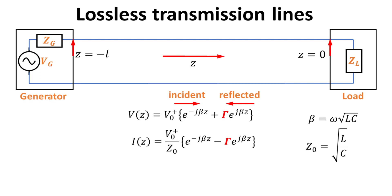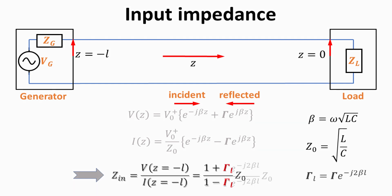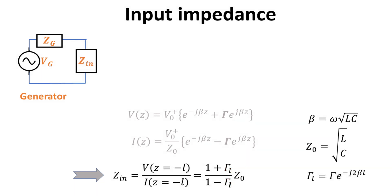We are now only left with one unknown, V0-plus. V0-plus can also be determined by specifying the boundary condition on the generator side. Let us define an input impedance Z_in, which is the impedance as seen from the generator end at Z equals minus L. Using Ohm's law, we can write Z_in as the ratio of voltage to current at that location. Here we introduce gamma_L, the phase-shifted reflection coefficient. This allows us to replace the right side of the circuit containing the transmission lines and load impedance with Z_in.